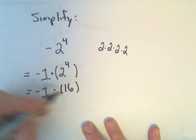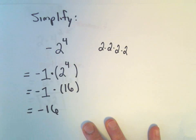So then we'll get negative 1 times 16, which is negative 16. And that's definitely our correct answer.